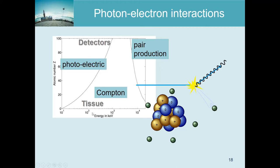Looking at the energies: measurements with a gamma camera are around 100-200 keV, and with a PET camera it's 511 keV, which is the rest mass of an electron. For those energies, the dominating effect in light material is Compton interaction. In the patient, atoms mainly have a low Z value - water, carbon, and oxygen - so the dominating effect there is Compton interaction.